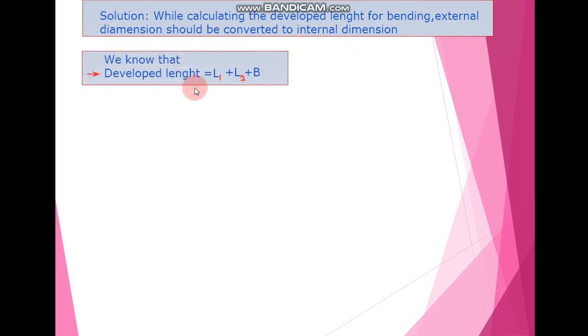In the solution, while calculating the developed length for bending, we need to convert the external dimensions into internal dimensions. The formula for developed length is L1 plus L2 plus B.